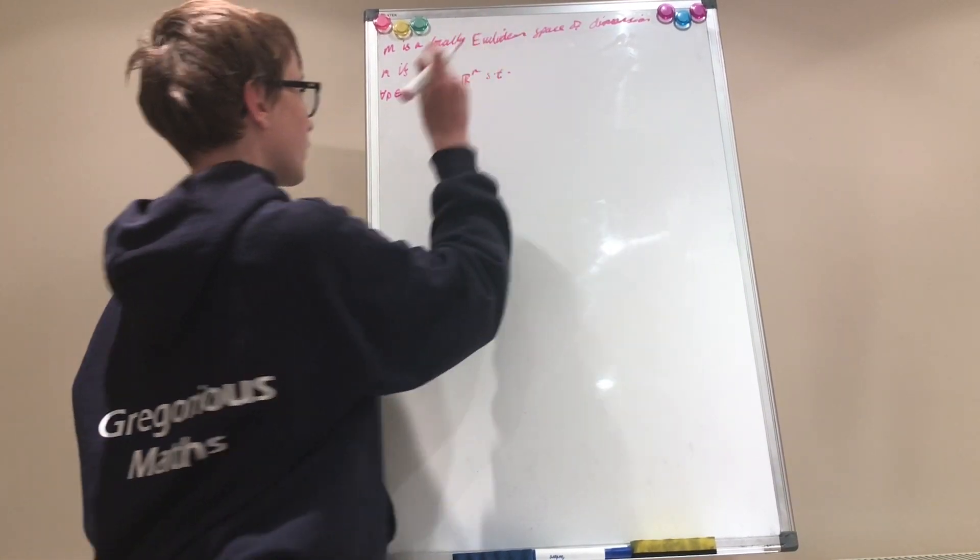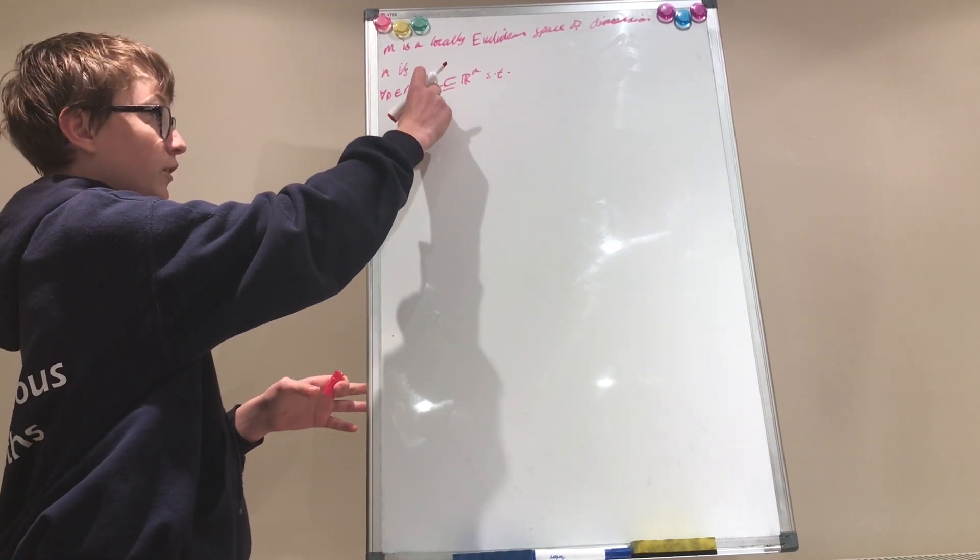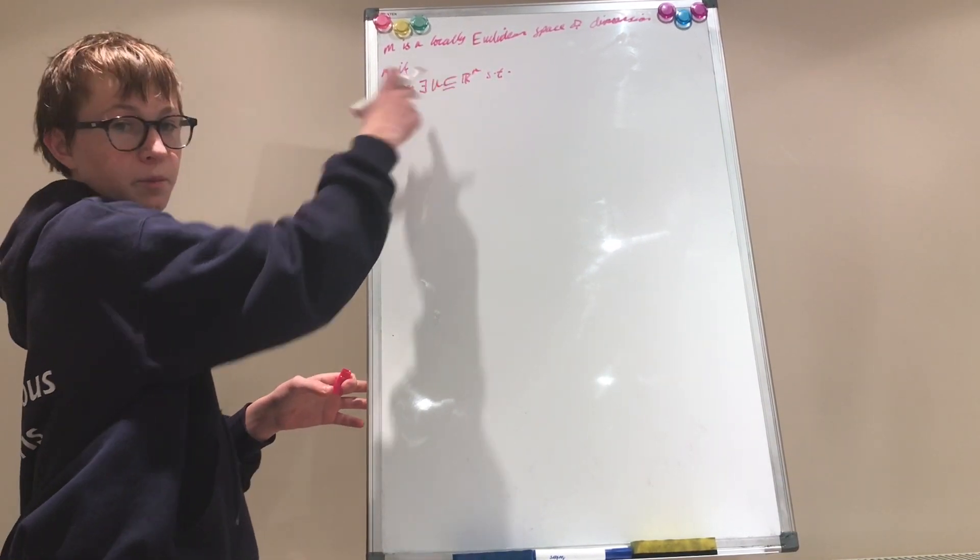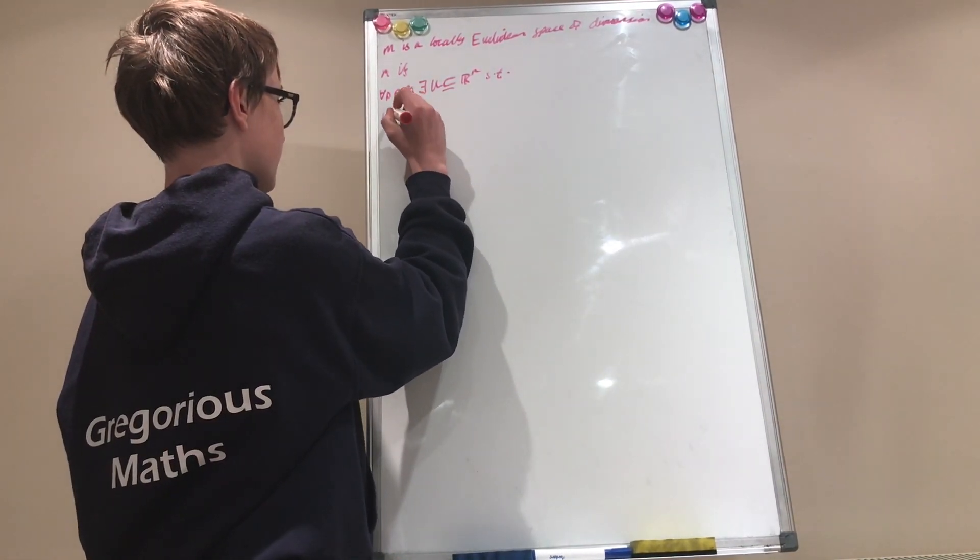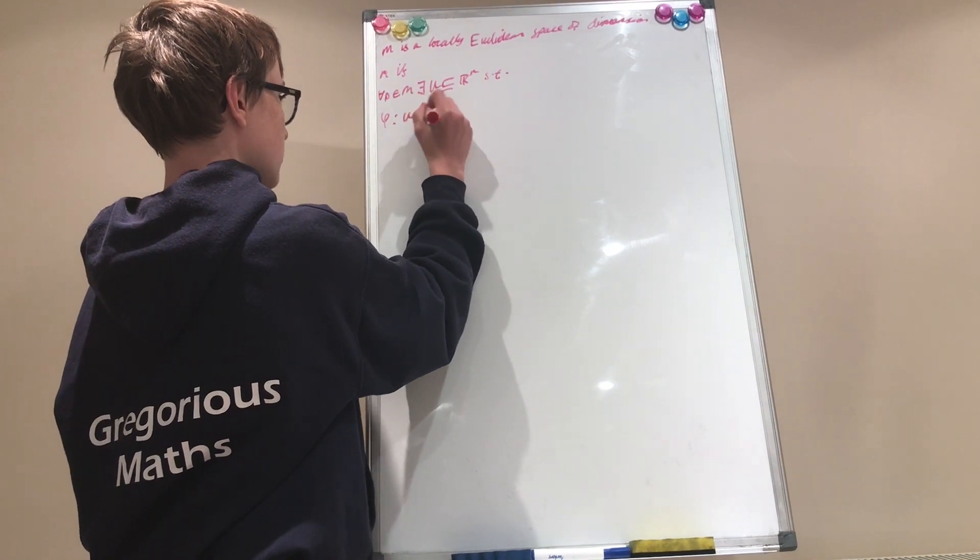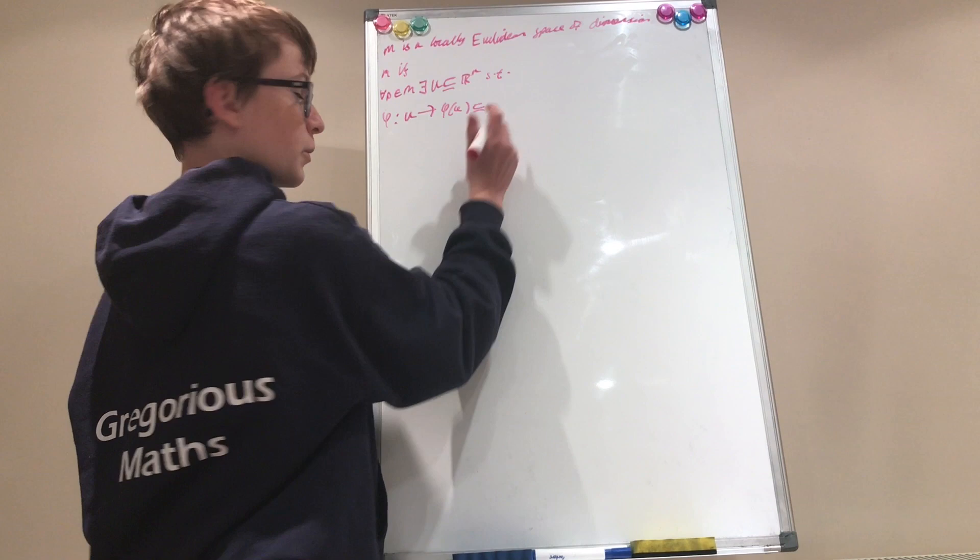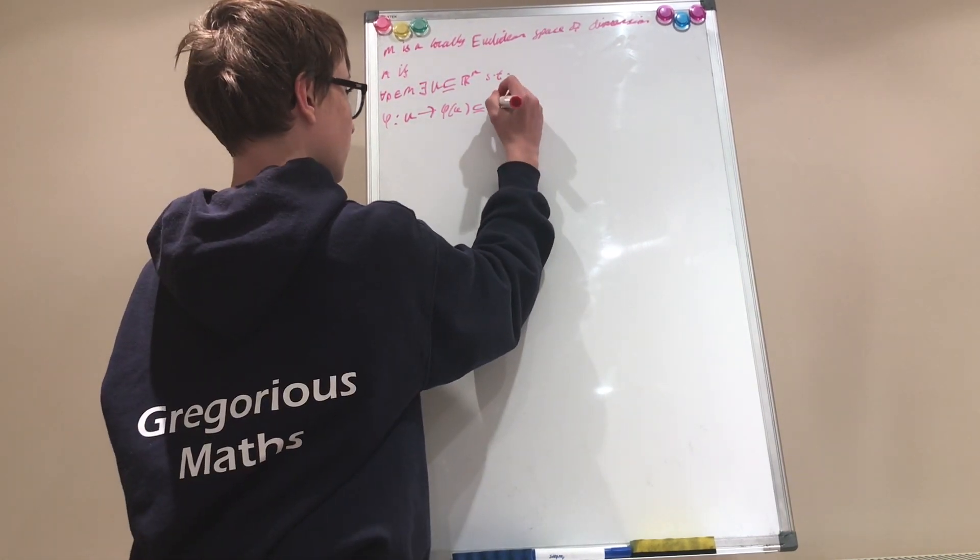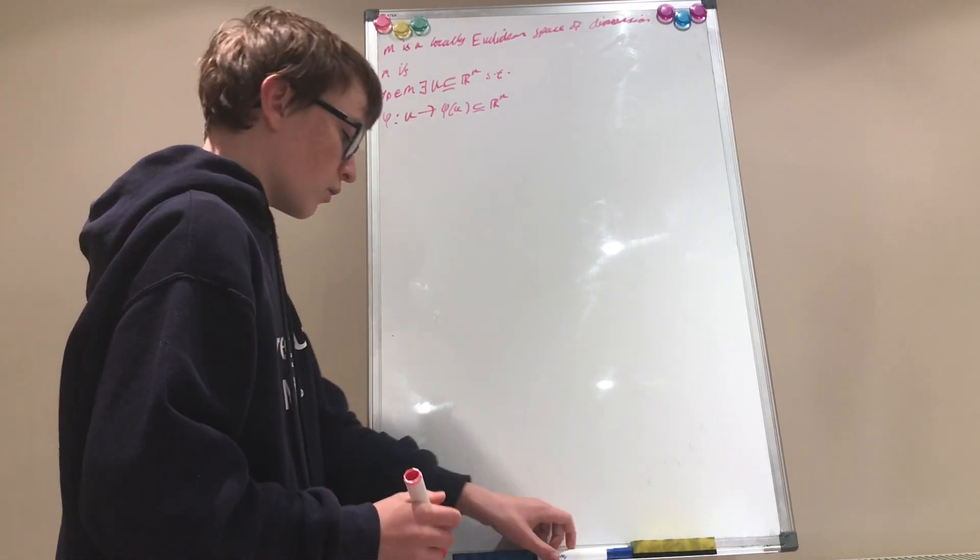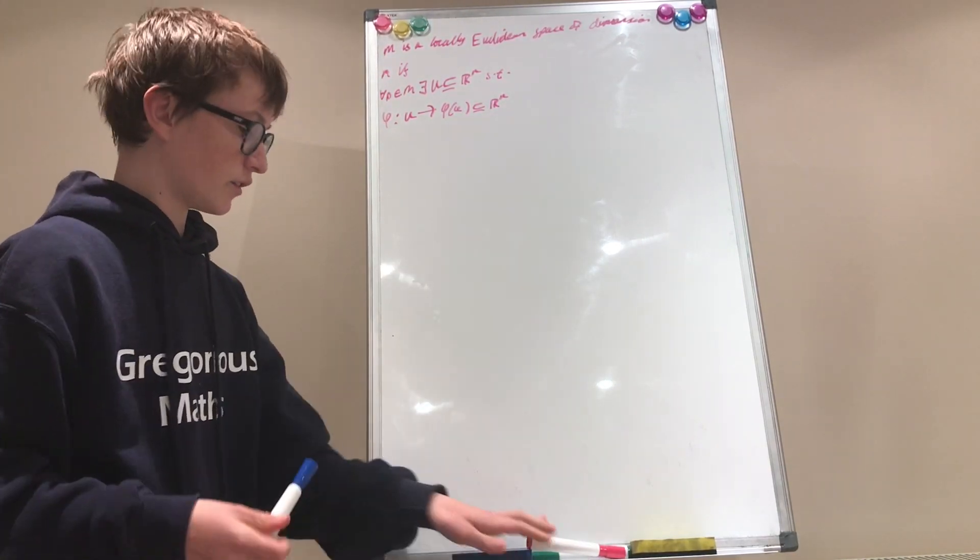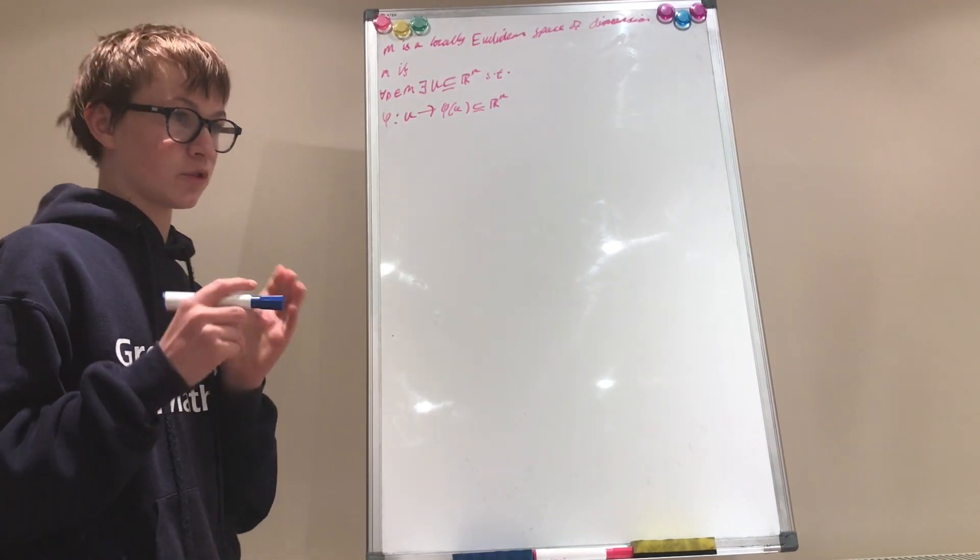So for every point P in m, we have an open neighborhood u, such that we have a homeomorphism phi, which takes you from u into phi of u, an open subset of R^n. Now, using this definition here, we can define a topological manifold.